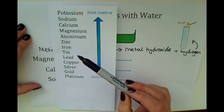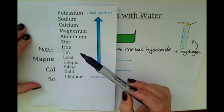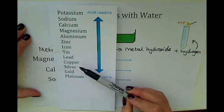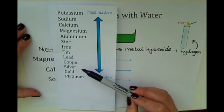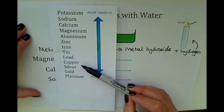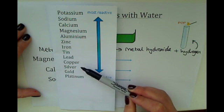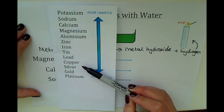For example, lower on the reactivity series we find metals such as copper. This doesn't react with water, and hence copper is the metal used for making water pipes a lot of the time, because we wouldn't want something that reacts with the water.